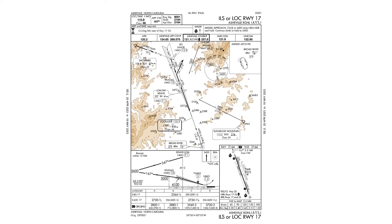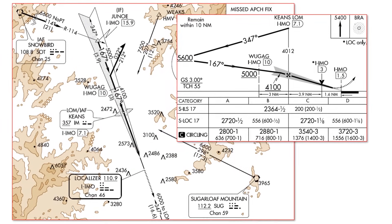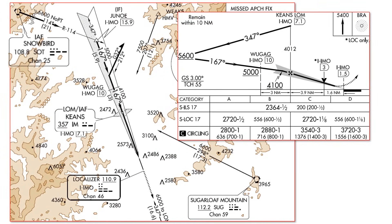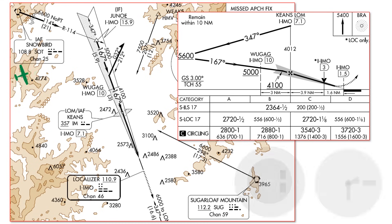First, consider this scenario. We're assigned the ILS approach into runway 17 at Asheville, NC. This approach has two initial approach fixes: one at the Snowbird VOR and another at the Keynes NDB, which also serves as the locator outer marker, defining the final approach fix. For this scenario, let's say we're getting radar vectors to final, starting off at 7,000 feet.